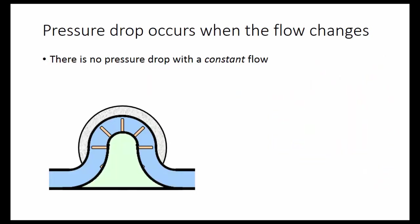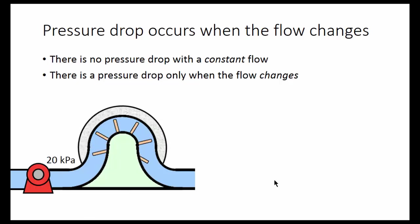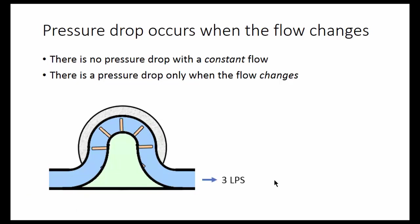What about the pressure and changes in flow rate? There is no pressure drop with a constant flow — the pressure will be the same on both sides when there's a constant flow. There's a pressure drop only when the flow changes. For example, let's connect a pump that maintains a pressure of 20 kilopascals. When we turn on the pump, the flywheel starts turning faster and faster, and over three seconds the flow rate changes from zero to 3 liters per second.